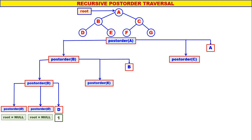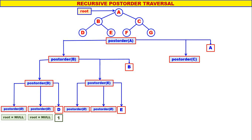After that we come to post_order(E). There is no left child for E, therefore it is post_order(null). There is no right child for E, therefore it is post_order(null), and display E. When root is null nothing will happen. E is the second one to be displayed. Post_order(E) is over. Next we have to display B — B is the third one to be displayed.